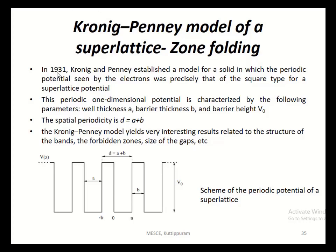In 1931, Kronig and Penney modeled a potential well for the movement of an electron. In this model, if the electron is on the positive ion side, its potential is assumed to be zero. If the electron is between two positive ion sites, its energy is assumed as V₀. That is, the potential is in the shape of a square wave. This periodic potential of a superlattice is characterized by parameters such as well thickness, barrier thickness, and barrier height.